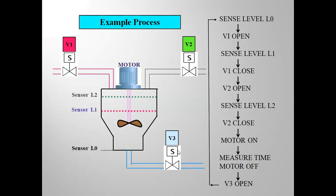For example, I have a sample process with some tanks, sensors and level indicators. There are two inlet valves for adding some raw material, a motor for mixing, and an outlet valve for the next process. This mixed material will go to the next location. To control this process, we can use the previous two methods — manually or using relay logic.